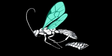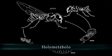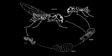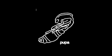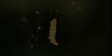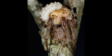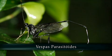As vespas, insetos que estudaremos neste vídeo, têm o desenvolvimento do tipo holometábulo, ou seja, com metamorfose completa. Apresentam os estágios de ovo, larva, pupa e adulto. Algumas vespas, nos estágios imaturos, desenvolvem-se como parasitas no corpo ou nos ovos de outros artrópodes. Estas são as vespas parasitoides.